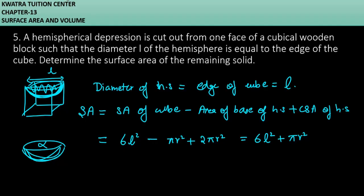First, you can see what is the relation between diameter and radius. So the diameter is L. So what will be the radius of hemisphere? L by 2. Now I will substitute the value of r as L by 2 in this.